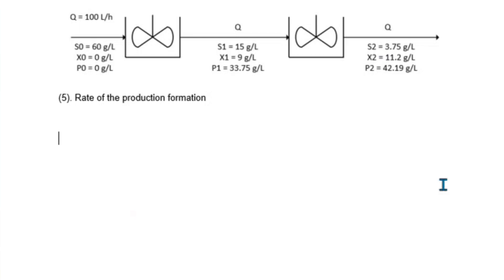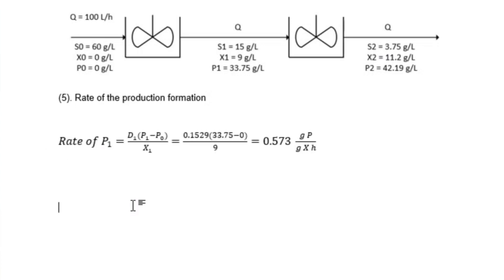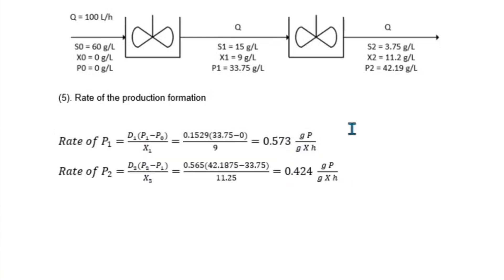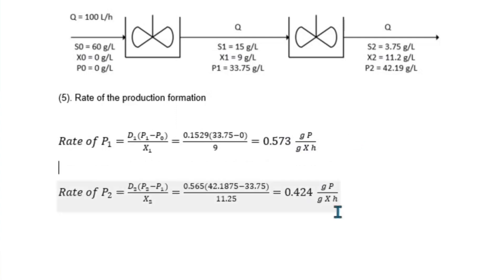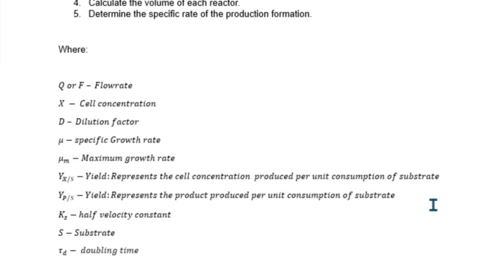Going back to the diagram, we can fill in all the answers obtained, including the volumes for each vessel. Lastly, let us calculate the rate of product formation. For stage one, qp1 = D1 × (P1 − P0) / X1. Substituting everything gives qp1 = 0.537. Similarly, for stage two, qp2 is calculated and gives 0.424.